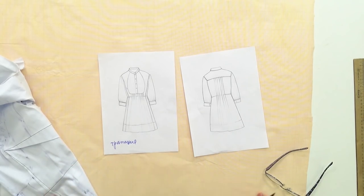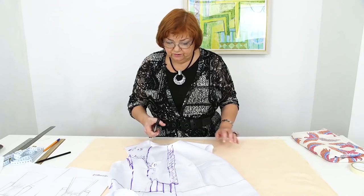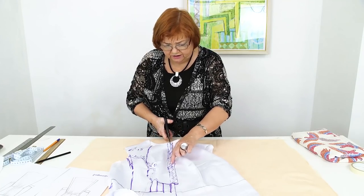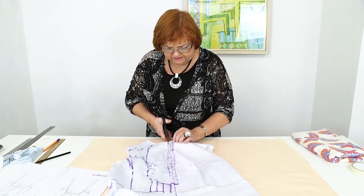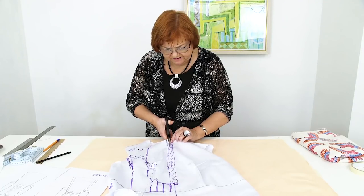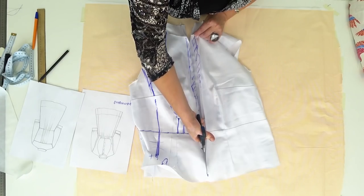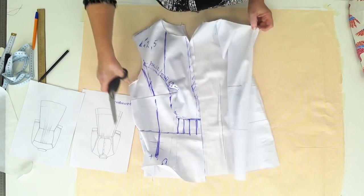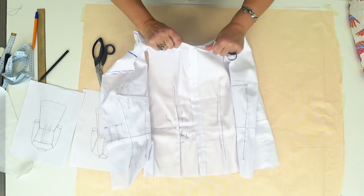This is the mockup we use for drawing. First I need to cut the center front. I'm cutting the fold we made when ironing the mockup. This is the center back.